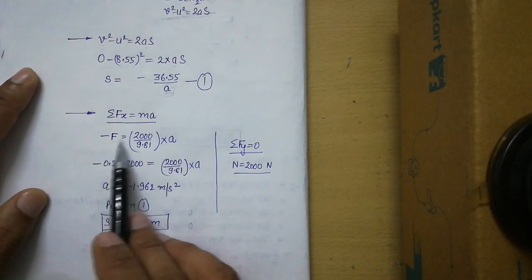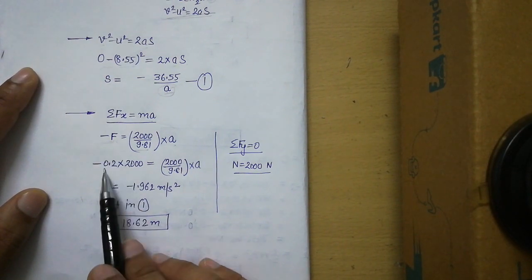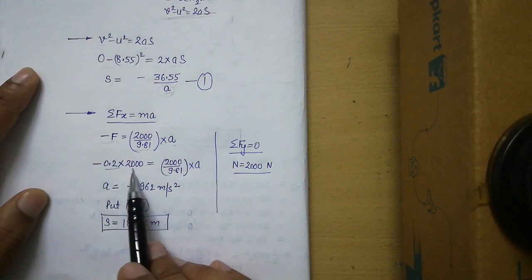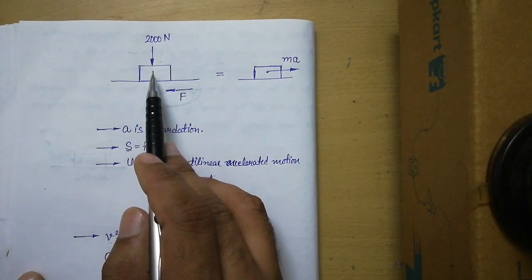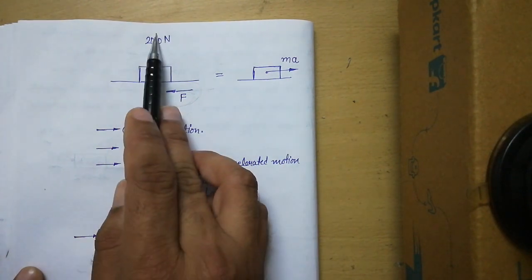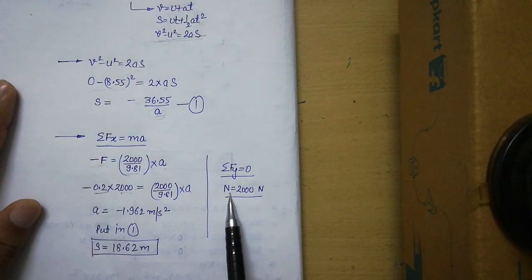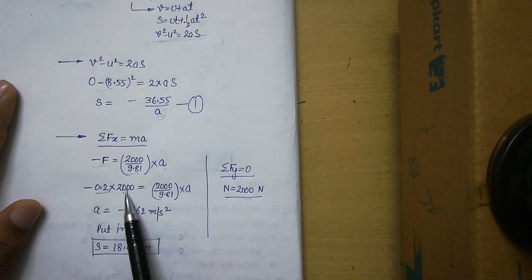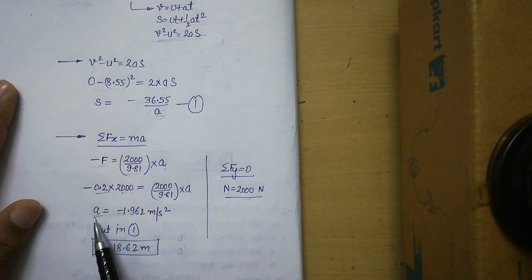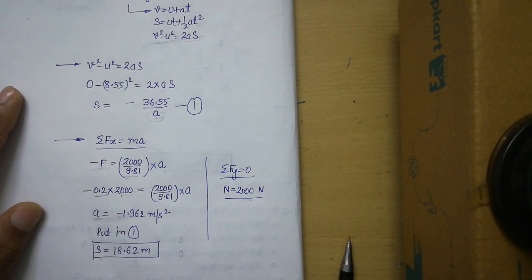Applying ΣFx = ma: minus friction force equals (2000/9.81) × a. Friction force equals μN = 0.2 × N. Applying ΣFy = 0 for this new free body (no 800 N force now), N equals 2000 Newton. Substituting gives the retardation value a. The negative sign confirms retardation. Substituting this value of a back into v² = u² + 2as, with v = 0 and u = 8.55, we calculate the final answer: the distance traveled by the block after Stage 2 when the 800 Newton pull is removed.